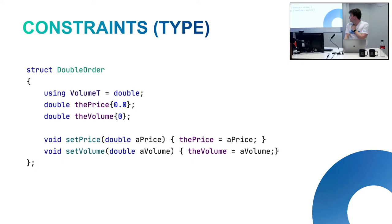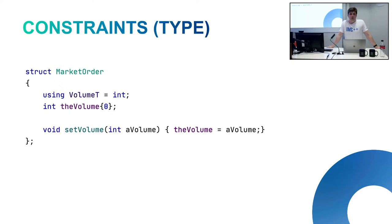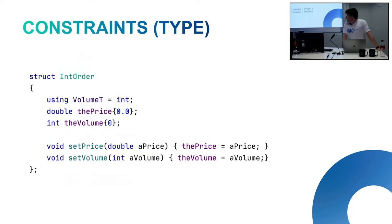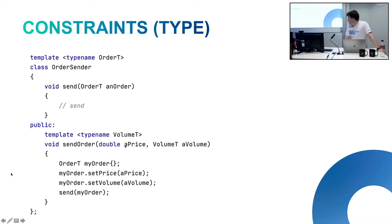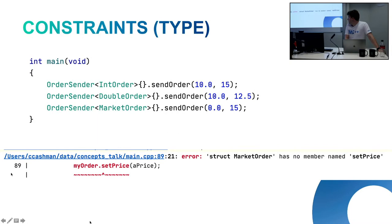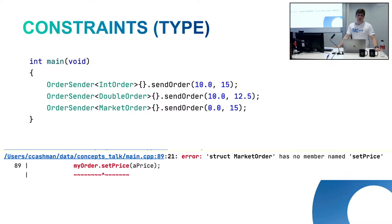What are the constraints on types we can use with this order sender? We can have an IntOrder where volume is just an int, maybe we want to buy five stocks. We can have a DoubleOrder where volume is a double, like 0.0. And then we have a MarketOrder, where you just say I want to buy this product, I don't care about the price. The market order doesn't have a setPrice function, so when we try to call send we get an error: 'market order has no member called setPrice'.